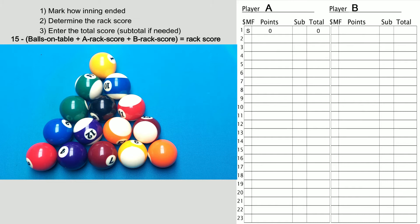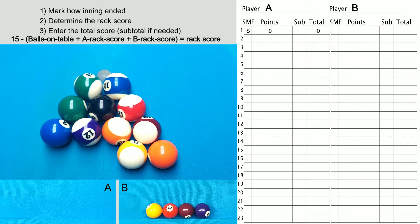Okay, let's assume that player B pockets four balls and then misses. Step 1: Mark an M for miss. Step 2: 15 minus 11 balls on the table minus zero for no other balls pocketed equals four. Step 3: Player B's total score is now four.